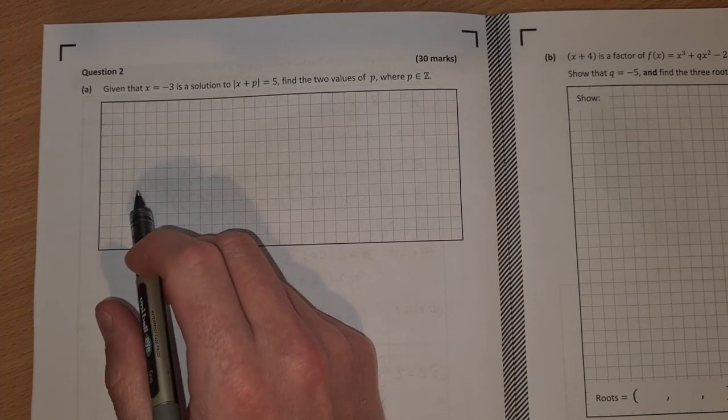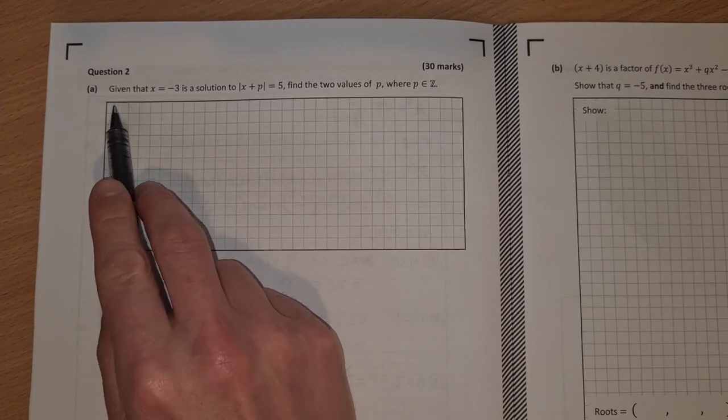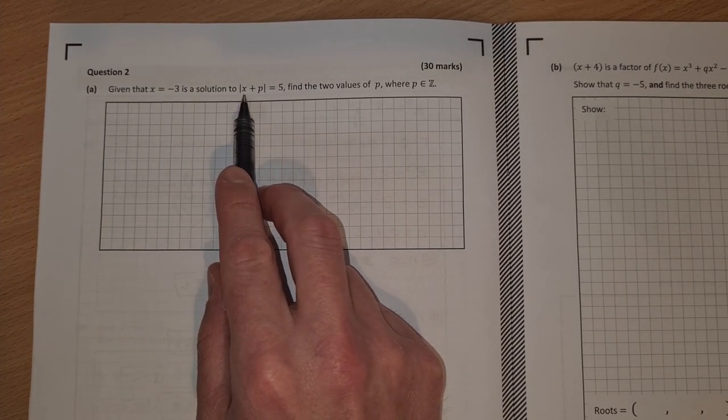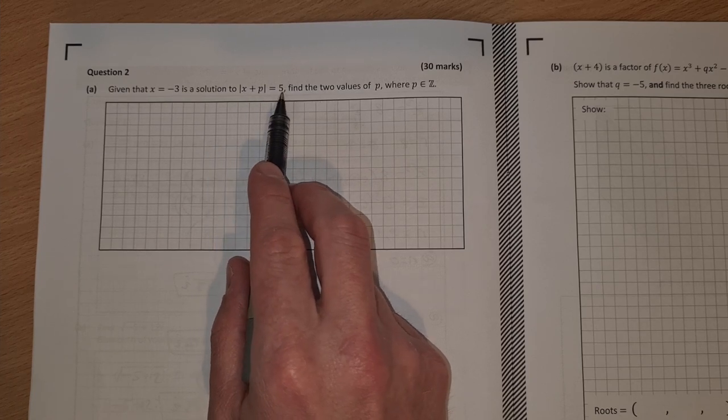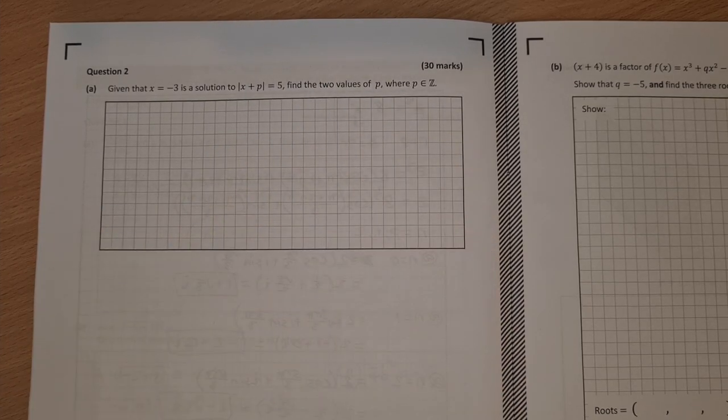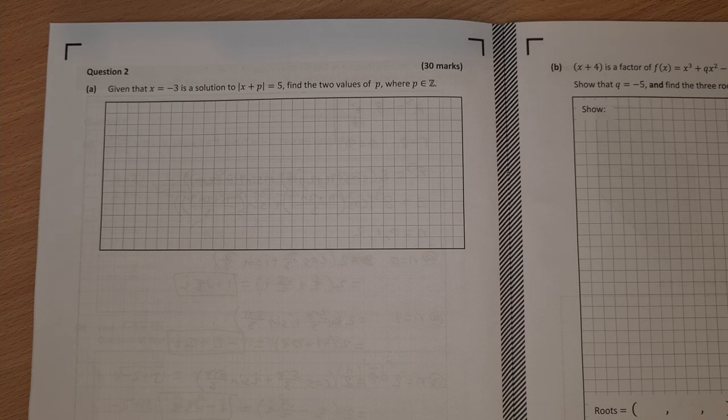So hopefully you did it and hopefully you were able to do it right. Given that x equals minus 3 is the solution to the absolute value of x plus p equals 5, find the two values of p where p is an element of z, the integers.